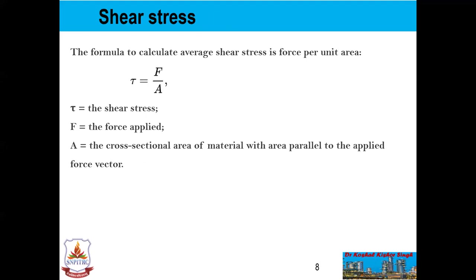Now we will discuss shear stress. The formula to calculate average shear stress is force per unit area: tau = F/A, where tau is the shear stress, F is the force applied on the fluid, and A is the cross-sectional area of the material with area parallel to the applied force vector.